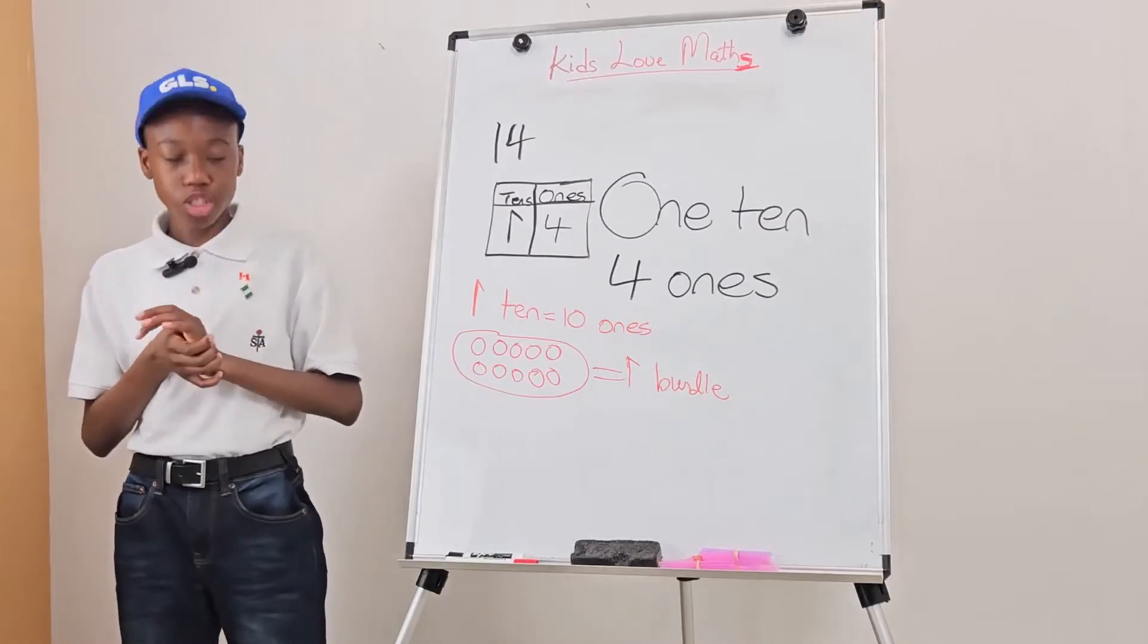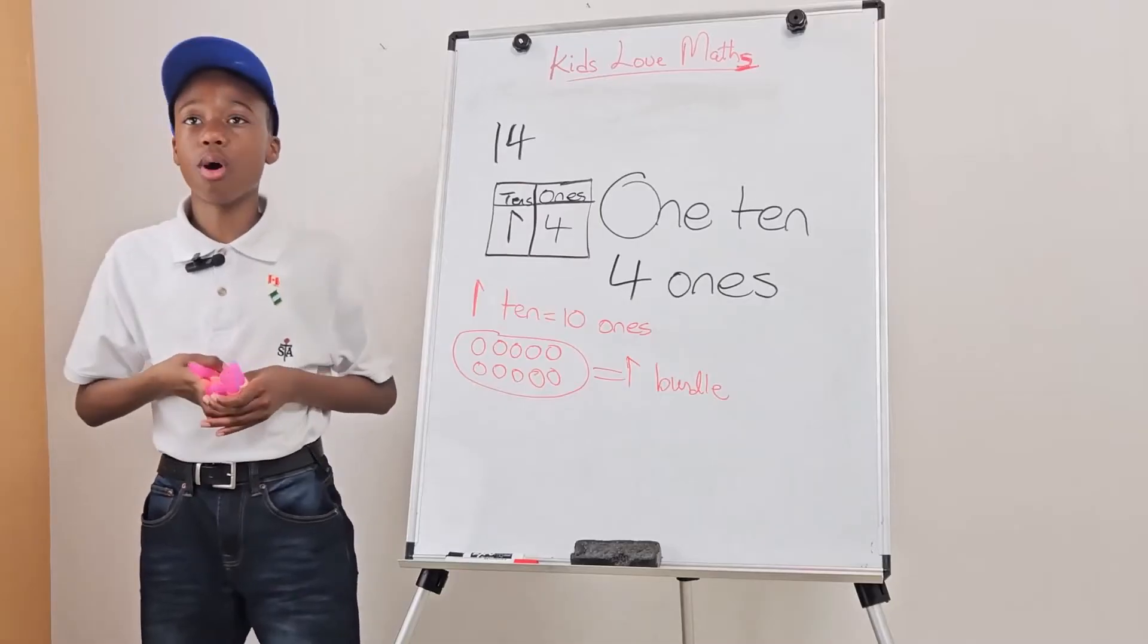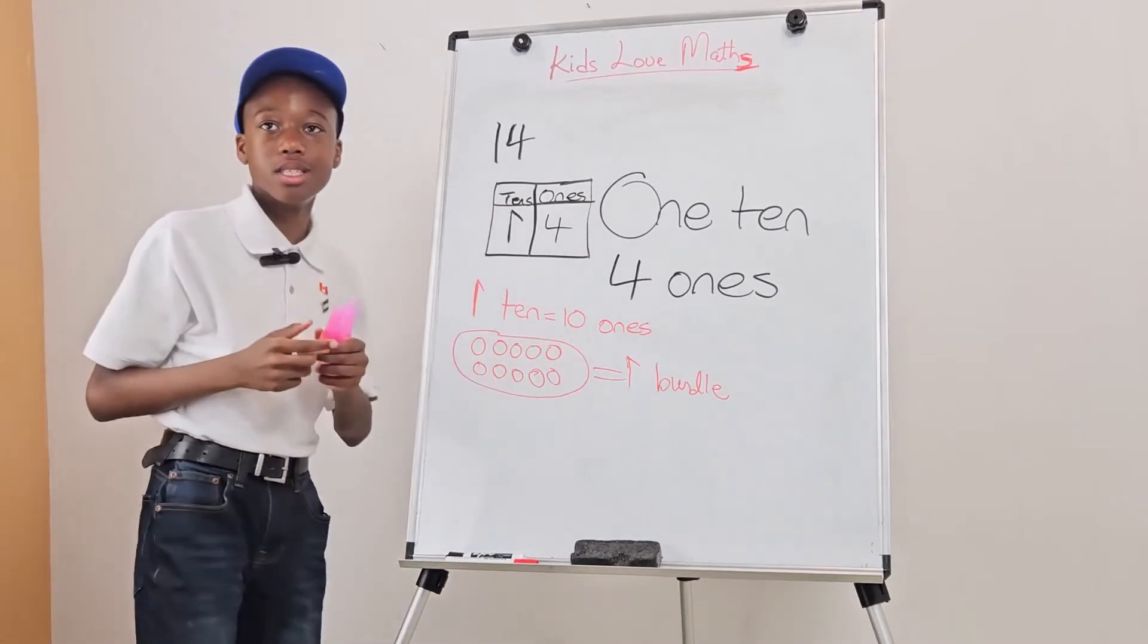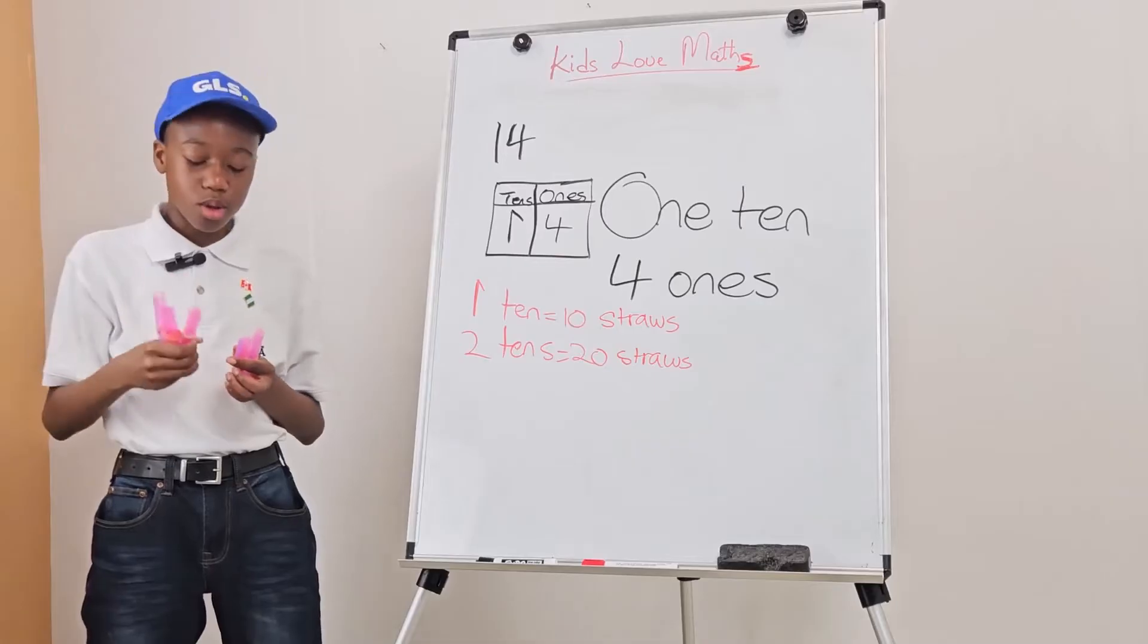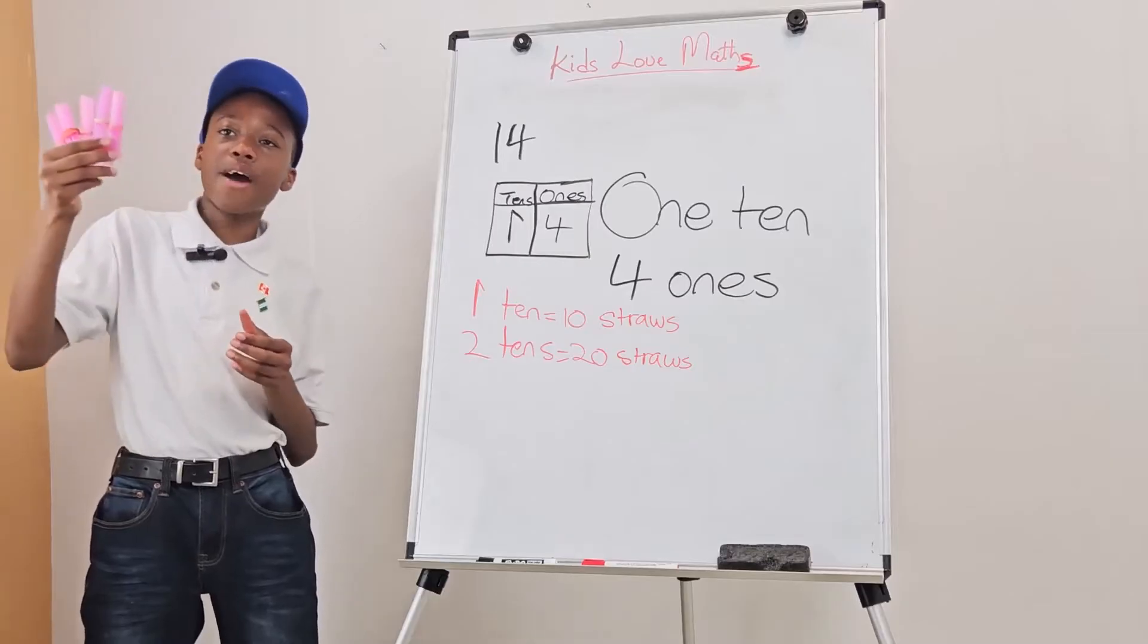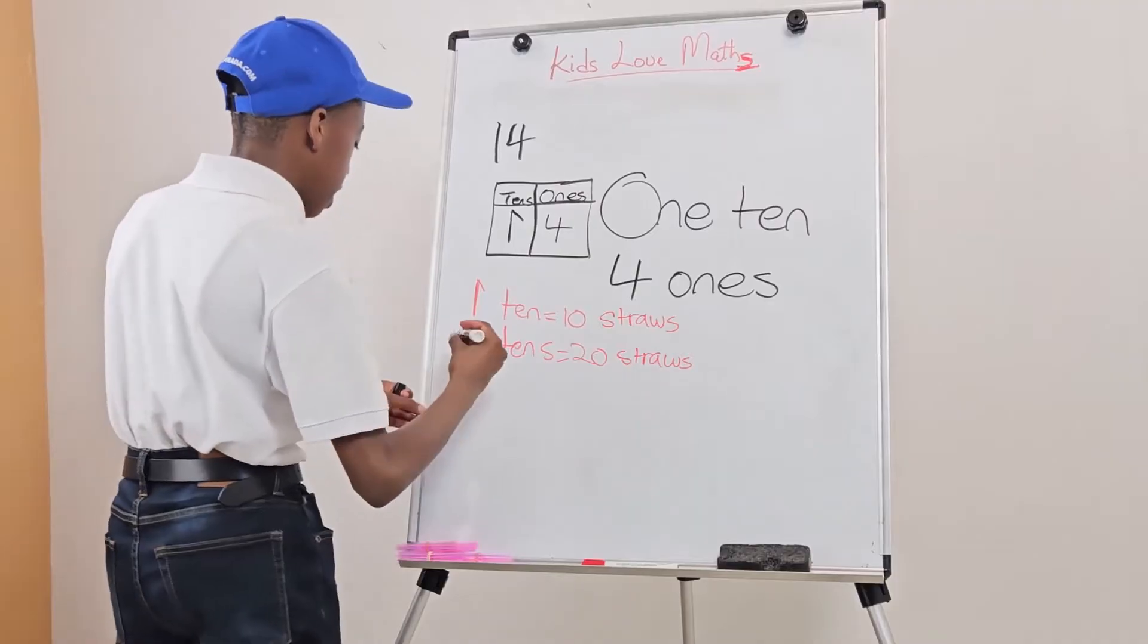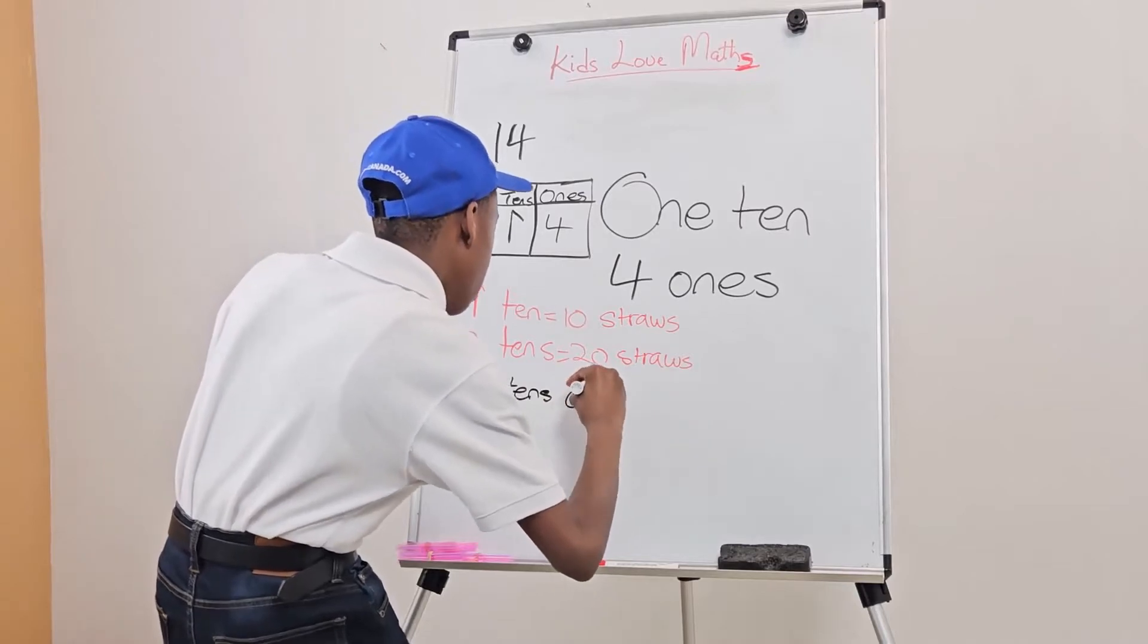Let us use some straws to show how this works. Here, I have five groups of straws, and each one contains 10. So, if we have 1 ten, 1 ten would equal to 10 ones. 2 tens equals 20 ones. 3 tens equals 30 ones. 4 tens equals 40 ones. And 5 tens equals 50 ones, or 50 straws in this case. So, how do you think we would write it? So, 50 simply is 5 tens, then 0 ones.